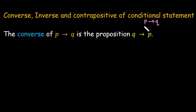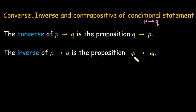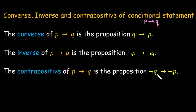In short, in the converse, the hypothesis gets converted into the conclusion and the conclusion gets converted into the hypothesis. We read it as: if Q then P. And if you want to write its inverse, the inverse of the conditional statement P implies Q is equal to negation P implies negation Q — that is, not P implying not Q. The third is the contrapositive, which is equivalent to negation Q implies negation P, meaning not Q implies not P.